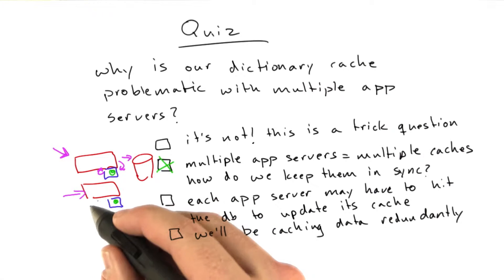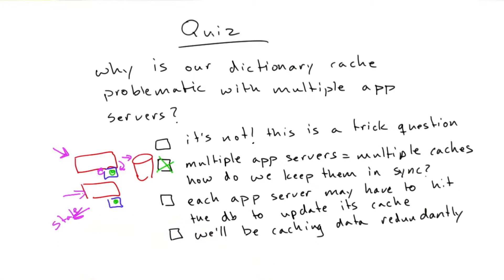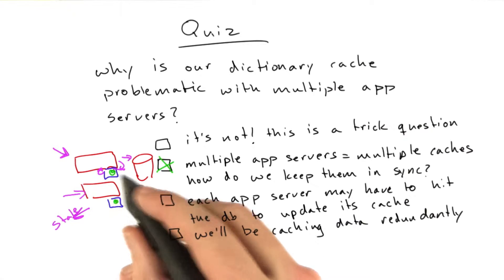So if a read comes in here, we're going to get stale cache. And that's no good. We've got to figure out a way of keeping these caches in sync.